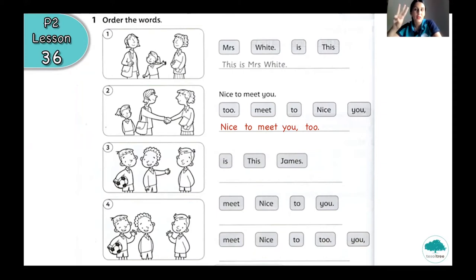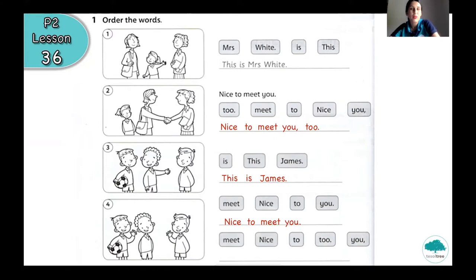Let's have a look at picture number 3. We can find three boys and they have a conversation. One boy introduces the other boy and says 'This is James.' Please check your answer. And let's check picture number 4 — two boys having a conversation. We have to write two sentences: 'Nice to meet you' and 'Nice to meet you too.' The boy is polite and happy to meet a new friend. Check your answers, P2. If you made a mistake, don't worry — you can use your eraser and correct yourself.